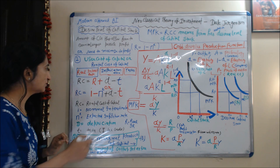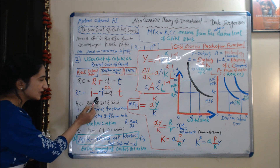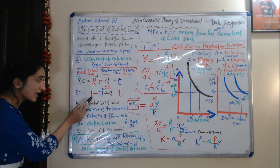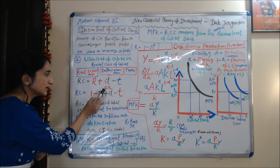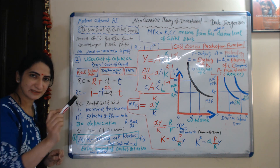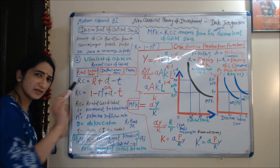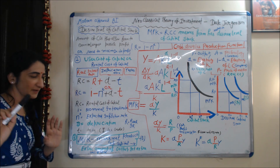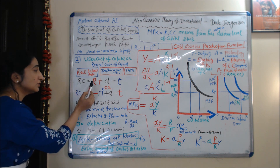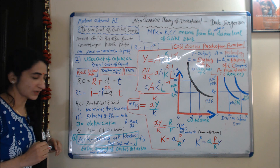So R is the real interest rate equal to I minus π^E. That's why we replace I minus π^E in place of R. D is depreciation and T is taxes. Both equation forms are the same. Our equation is: rental cost of capital equals real interest rate plus depreciation minus taxes.